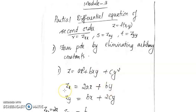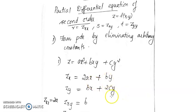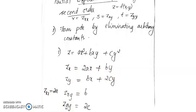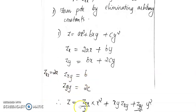Differentiating with respect to x gives z_x = 2ax + by. Differentiating with respect to y gives z_y = bx + 2cy. We cannot eliminate all three arbitrary constants using these two equations, so we go for the second order derivatives. z_xx = 2a, z_xy = b, and z_yy = 2c. From here we get a = z_xx/2, b = z_xy, and c = z_yy/2.